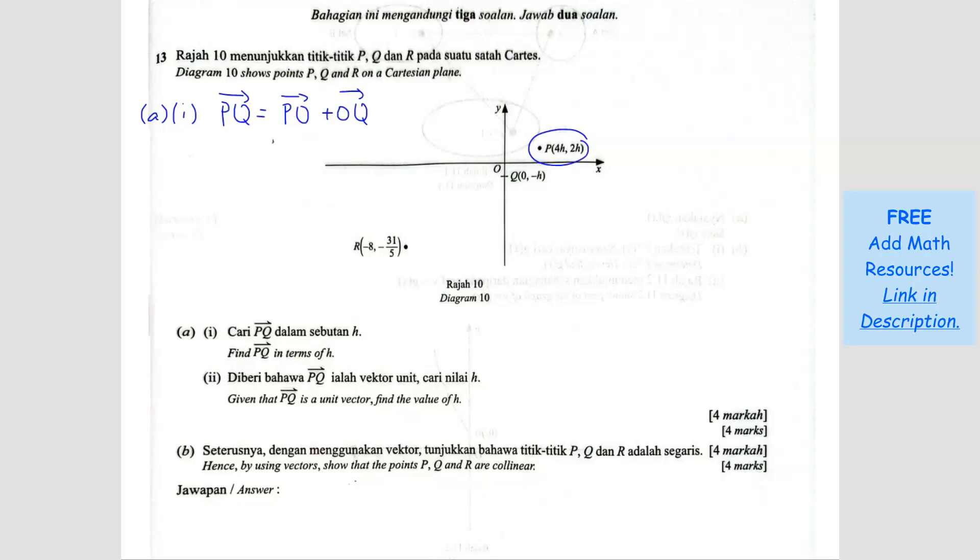So P to O, this P here will represent, if let's say OP, we always start with O, right? So OP will be the vector 4H and 2H. And then OQ we know is 0, negative H. So now we are looking for PO plus OQ. PO will be the opposite of OP. So it will be negative 4H, negative 2H plus OQ is 0, negative H. So your answer is negative 4H minus 3H.